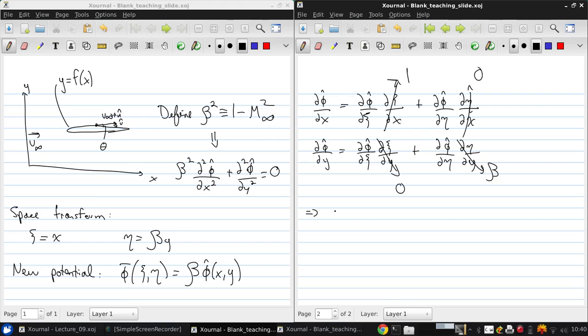So, this tells us that we can rewrite this now in simplified form. d phi hat dx is the same thing as d phi hat d xi, or d xi. And d phi hat dy is beta d phi hat d eta.